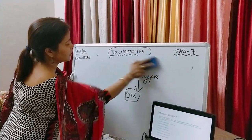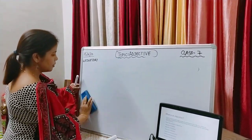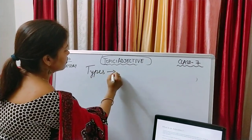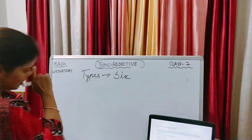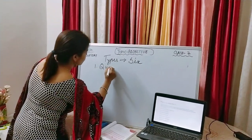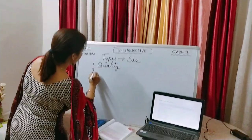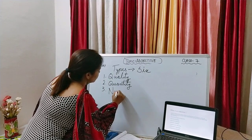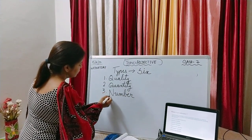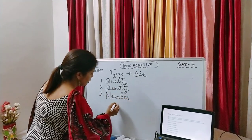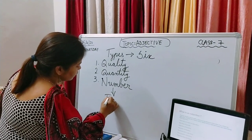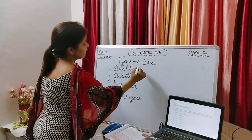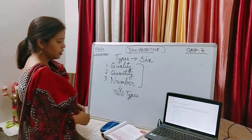Adjectives are of six types. The first type we will be dealing with is quality. The second is quantity. The third is number — and this number is again divided into two types. Today we will deal precisely with these three: quality, quantity, and number.